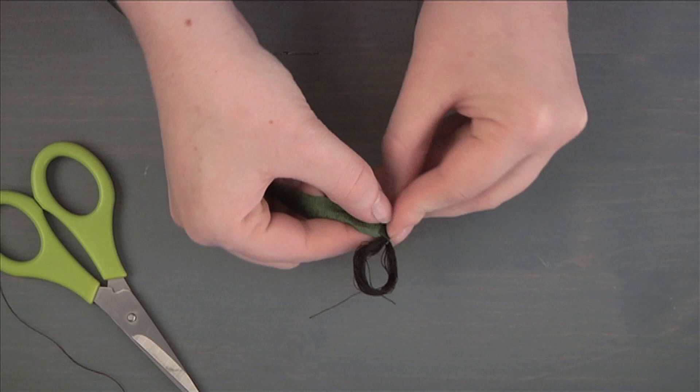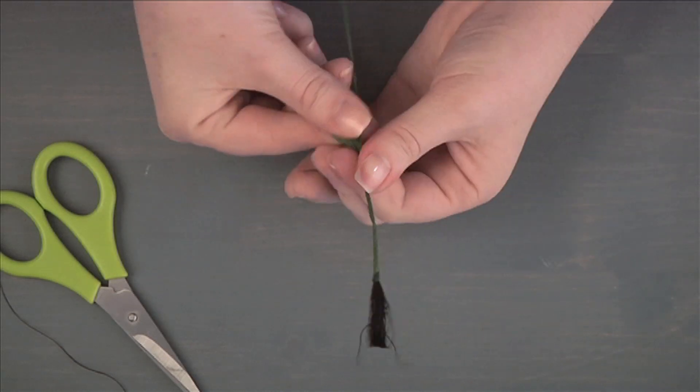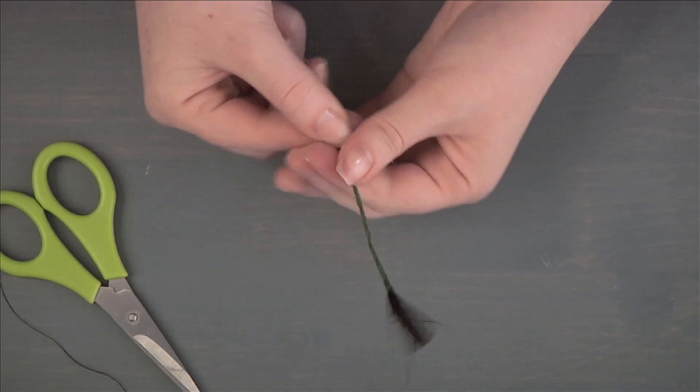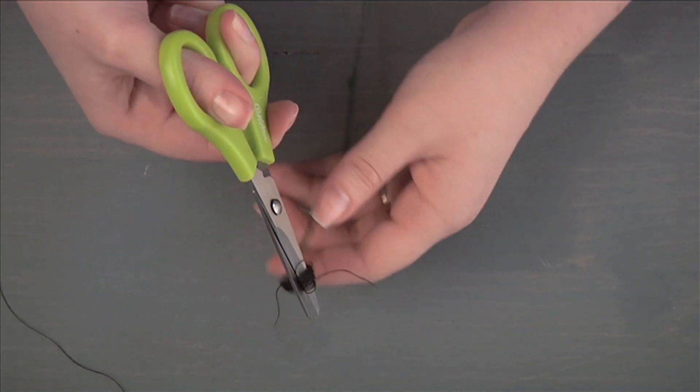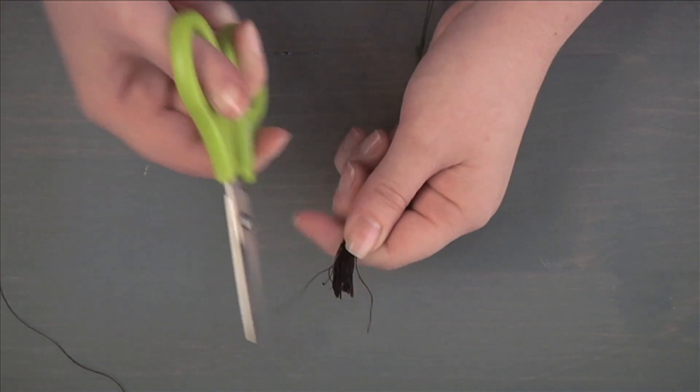Tape wire to secure the threads. Repeat to make four additional clusters. Using scissors, cut the loops and trim the threads to desired lengths.